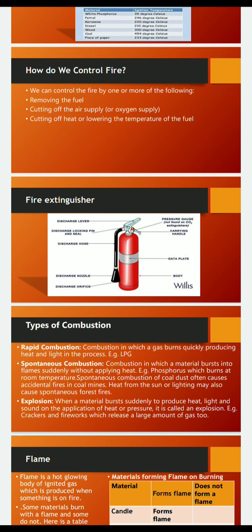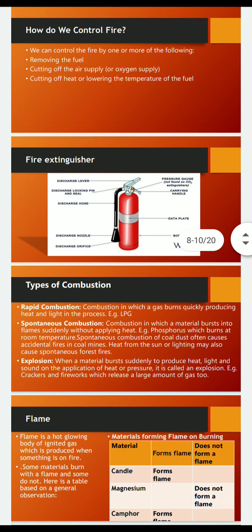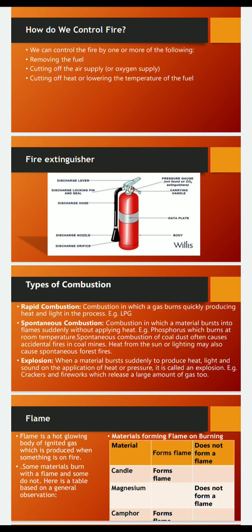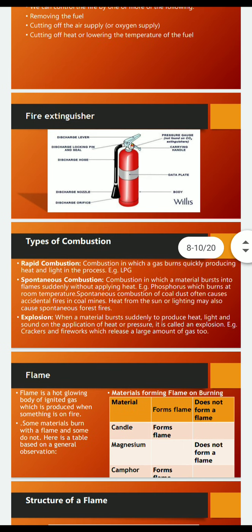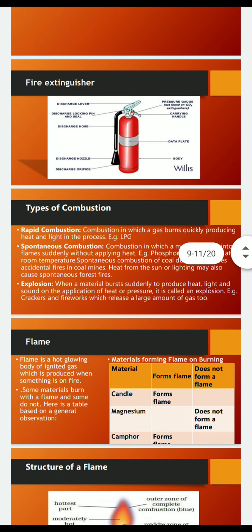Next is flame. A flame is a hot glowing body of ignited gas produced when something is on fire. Not all materials burn with a flame; substances which vaporize during burning give out flames. For example, when you burn a candle, the wax around it melts and vaporizes. The vaporized molten wax moves upward through the wick due to capillary action, and these vapors burn in air to produce a flame.